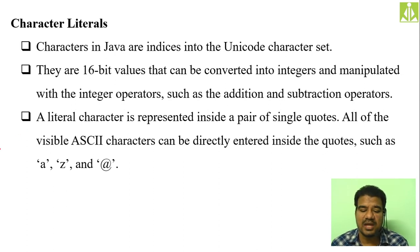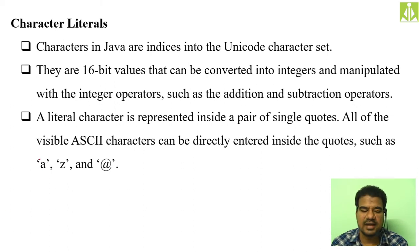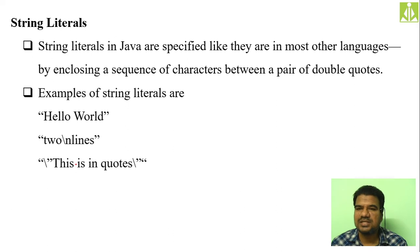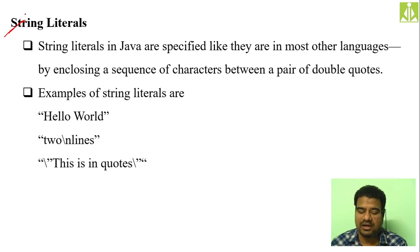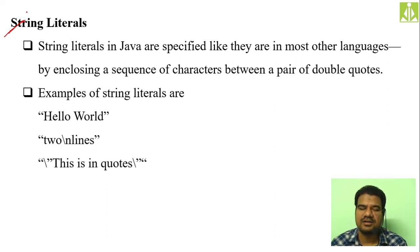Then character literals — using 16-bit Unicode characters. Whenever you represent characters in your program you have to use single quotations — examples like 'a', 'z', '@' and so on. Then string literals — this is a special type. The string concept is different in Java compared to C and C++. In C and C++ to get a string we declare a character array and add the null character at the end. But in Java, string is something different.